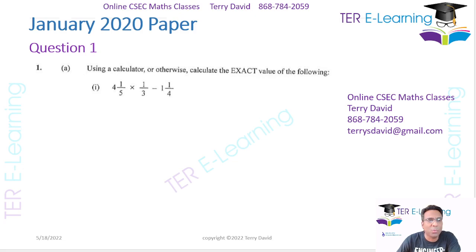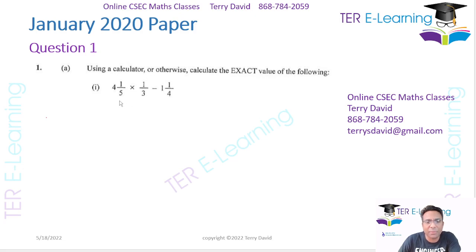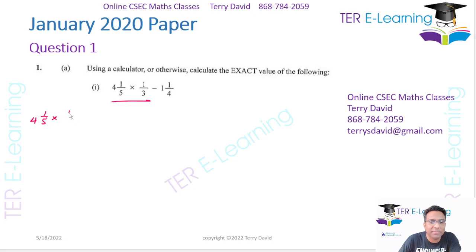So question one, using a calculator or otherwise, calculate the exact value of this here. We have a fraction: four and one-fifths multiplied by one-third minus one and a quarter. What I'm going to do is the multiplication first — four and one-fifths multiplied by one-third.